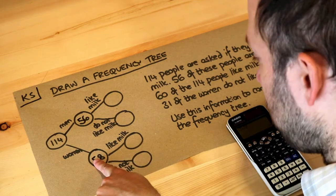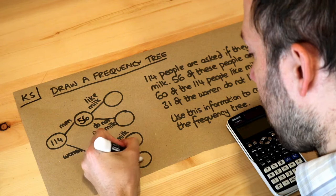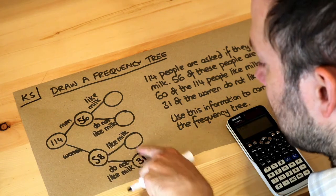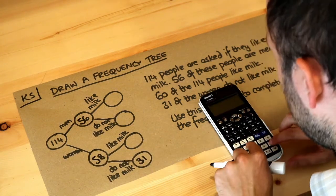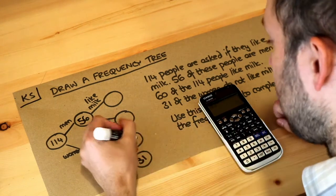So for the women, 31 do not like milk. And because we know that these two numbers add up to the 58, we can do 58 minus 31, which is 27.